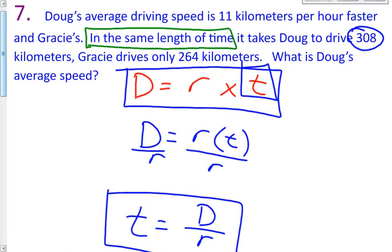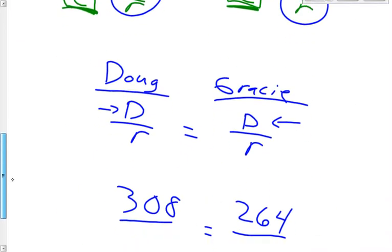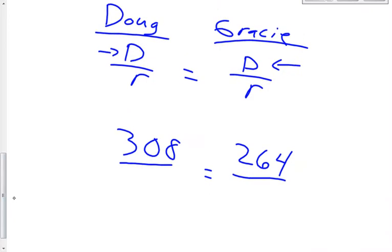What is Doug's average speed? What it's asking for is what is the rate of Doug? We kind of have to go back to this first sentence. Doug's average driving speed is 11 kilometers per hour faster than Gracie. We don't know how fast either of them drove. We just know Doug drove faster, 11 kilometers per hour faster. So if we say Gracie drove x kilometers per hour for her rate, Doug is 11 more than that. So it would be x plus 11. We have successfully set up our equation.